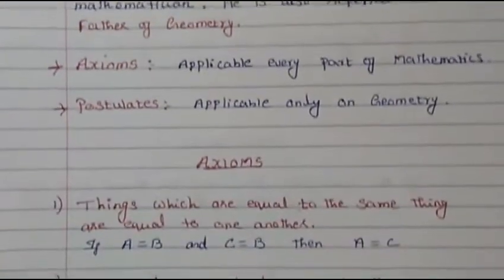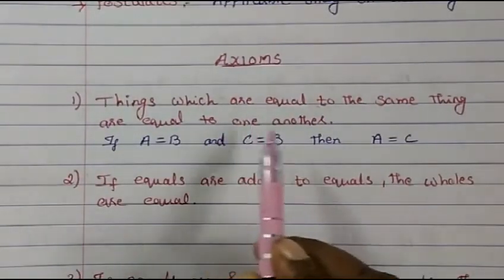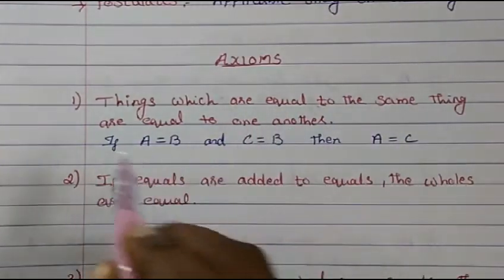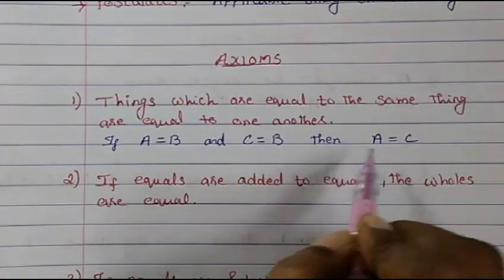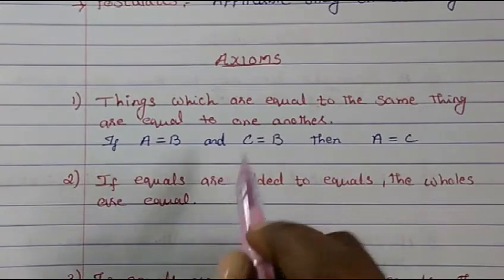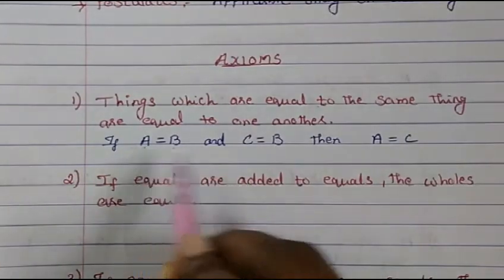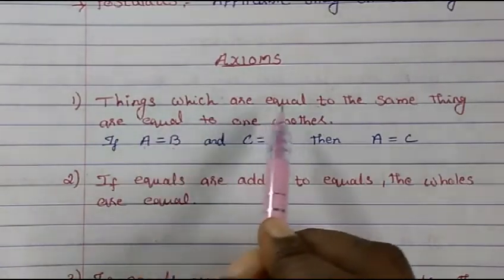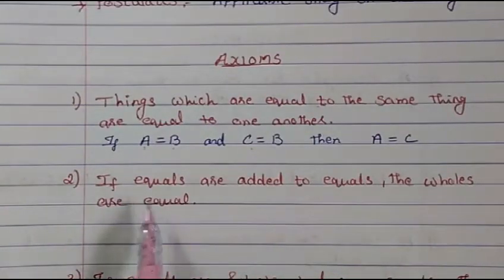The first axiom: things which are equal to the same thing are equal to one another. For example, if A is equal to B, and C is also equal to B, then A will be equal to C. Since both A and C equal B, they are equal to each other.